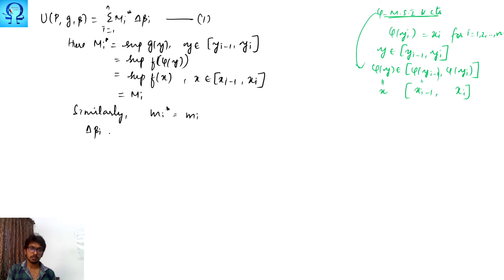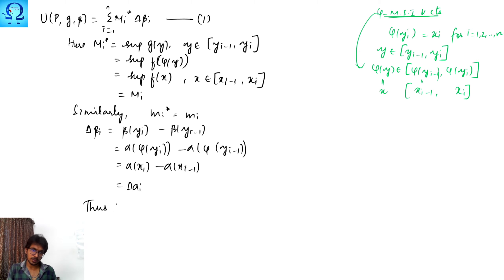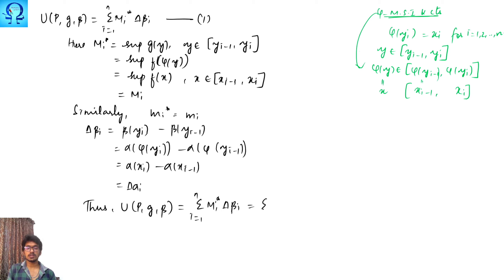Now consider Δβ_i = β(y_i) − β(y_{i-1}) = α(phi(y_i)) − α(phi(y_{i-1})) = α(x_i) − α(x_{i-1}) = Δα_i. Thus U(P, g, β) = summation from i=1 to n of M_i* · Δβ_i = summation from i=1 to n of M_i · Δα_i, which equals U(P*, f, α).